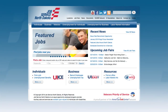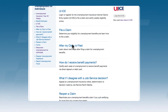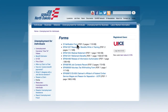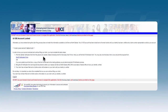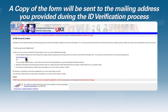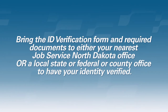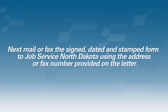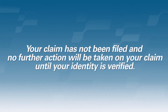Your UIICE account will remain locked until your identity has been verified. To have your account unlocked and continue filing your claim, you must complete the following steps. Print the identity verification form from the JobsND.com website by selecting Unemployment for Individuals, then Forms. You may also click on the link to view and print the required form. A copy of this form was also sent to the mailing address you provided during the ID verification process. Bring the ID verification form and required documents to your nearest Job Service North Dakota office or a local, state, federal, or county office to have your identity verified. Then mail or fax the signed, dated, and stamped form to Job Service North Dakota using the address or fax number provided on the letter. Do not delay — it is important you return the completed form so you can continue filing your claim.